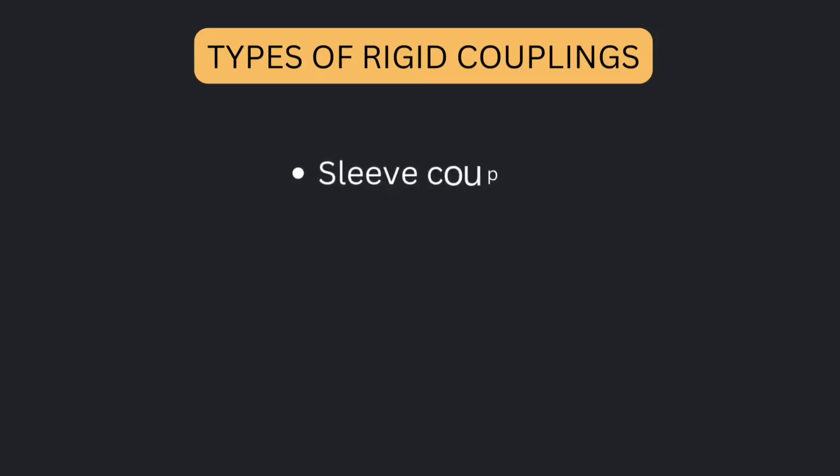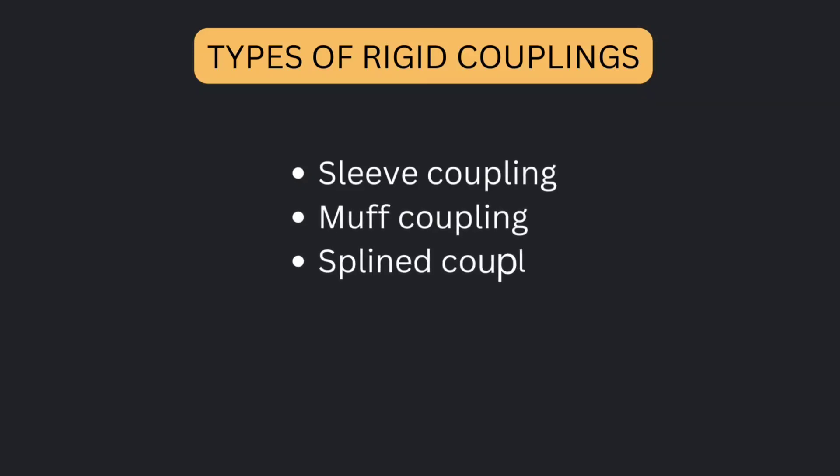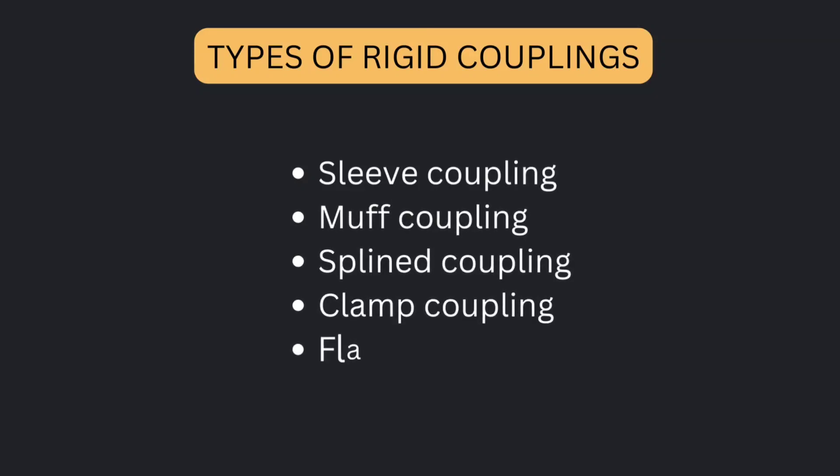Types of rigid couplings: Sleeve coupling, Muff coupling, Splined coupling, Clam coupling, and Flange coupling.